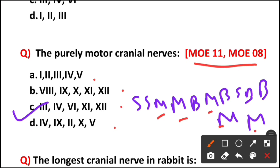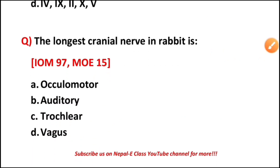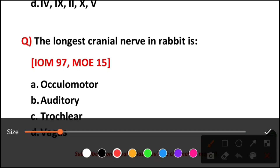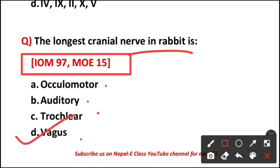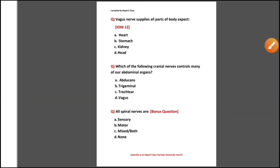Question three: the longest cranial nerve in rabbit is — option A, option B, option C trochlear, or option D vagus? In both humans and rabbits it is the same — the longest cranial nerve is option D, the vagus nerve. This question was asked in IOM 1997.